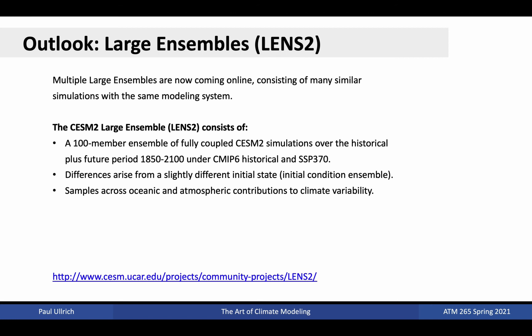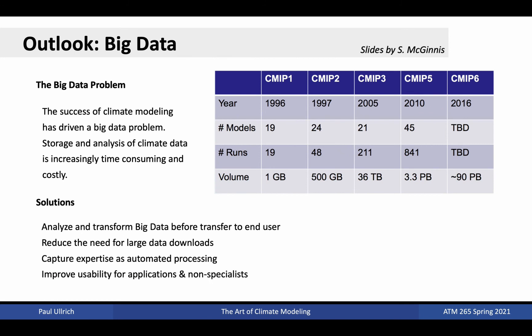On the topic of ensemble simulations, multiple large ensemble runs are now coming online, consisting of many similar simulations with the same modeling system. For instance, the CESM2 large ensemble has been slated for release in mid-June 2021, and will include 100 members over the period of 1850 to 2100 using CMIP-6 historical conditions and SSP-370. The differences between ensemble members arise from slightly different initial states, and are chosen to sample across oceanic and atmospheric contributions to climate variability. This promises to be an immensely valuable resource for deepening our understanding of the global Earth system. Projects like the CESM large ensemble and the Coupled Model Intercomparison Project have driven explosive growth in the number and amount of global climate data we now have available. While this data has provided immense insight into the climate system, storage and processing of this data remains an ongoing challenge, and many different strategies are now being investigated for exploring the wealth of climate data at our disposal.